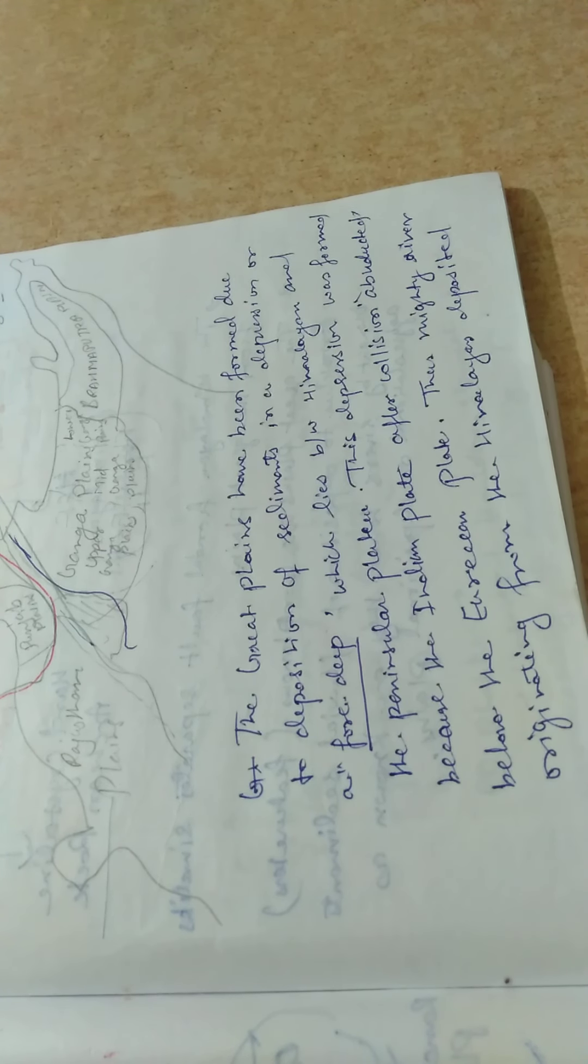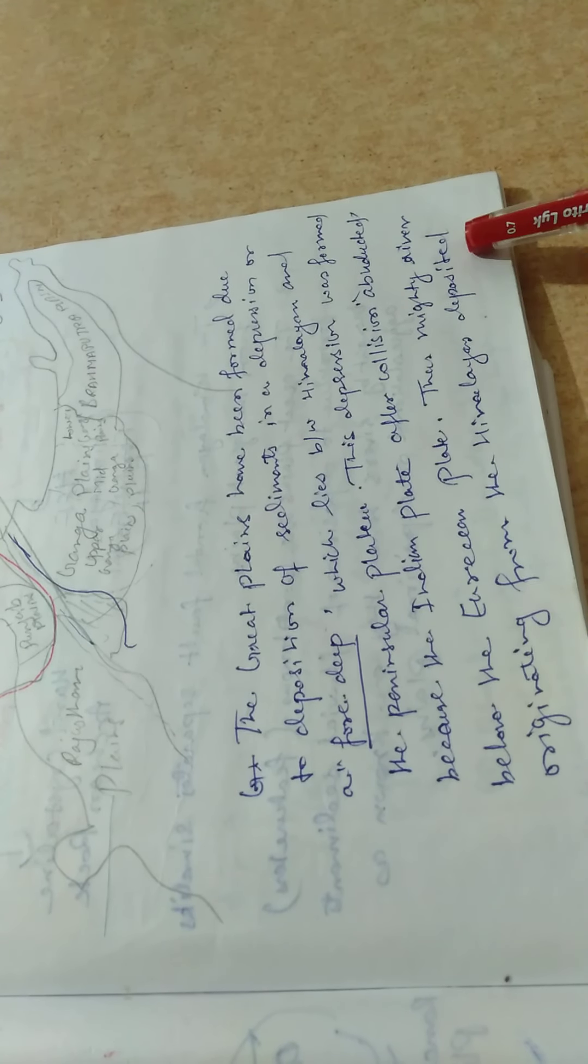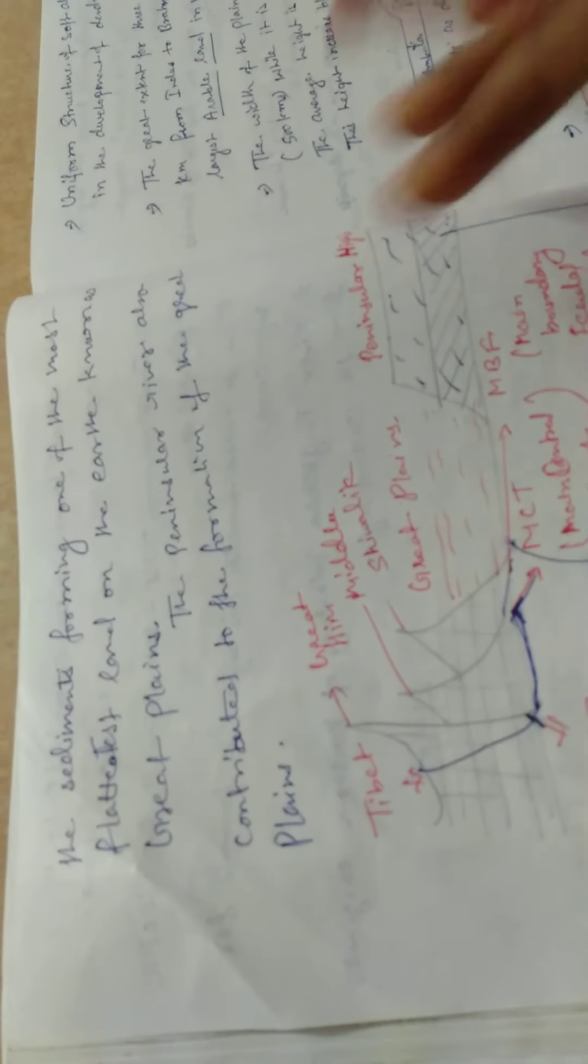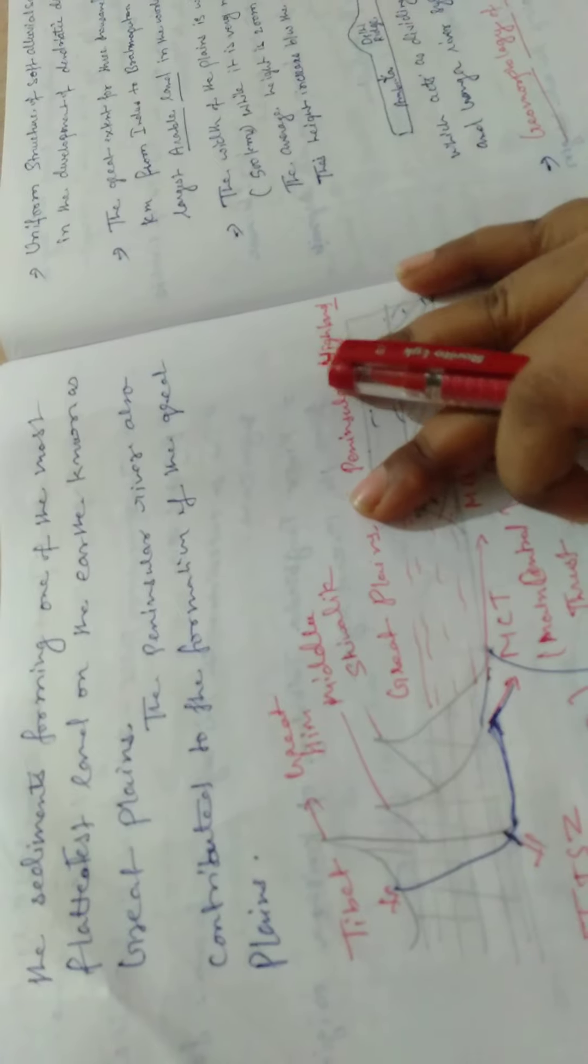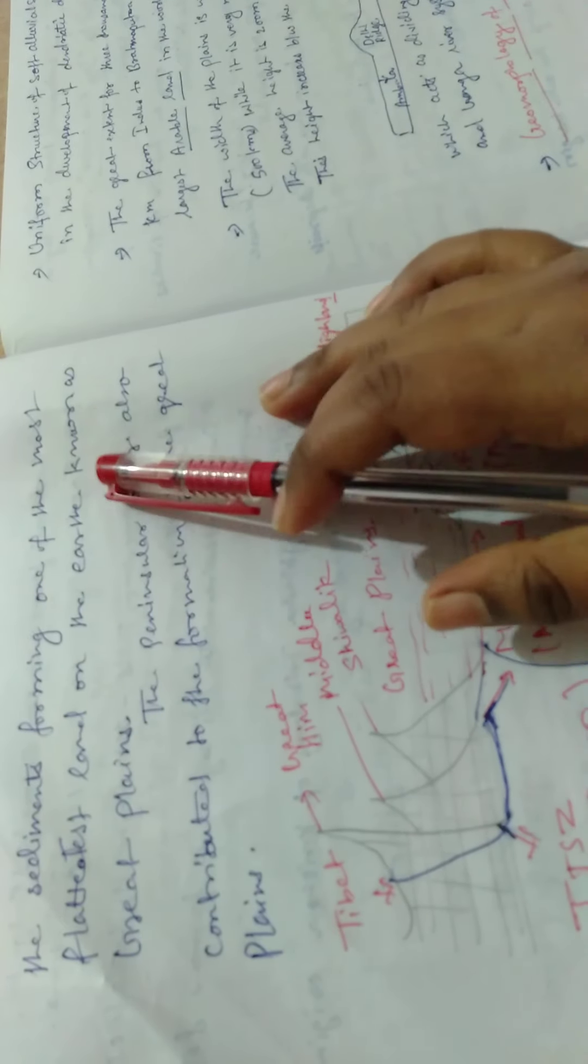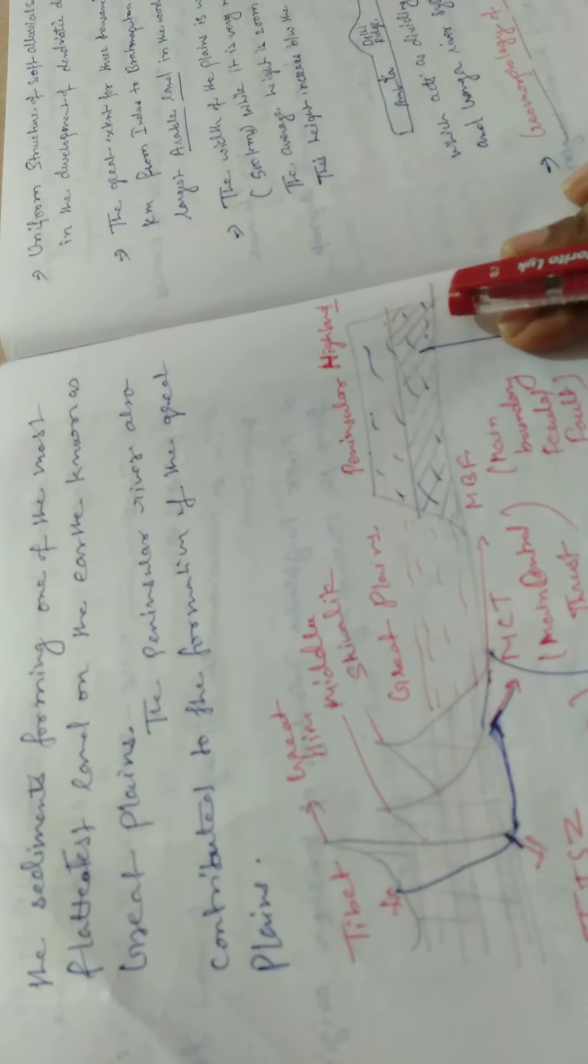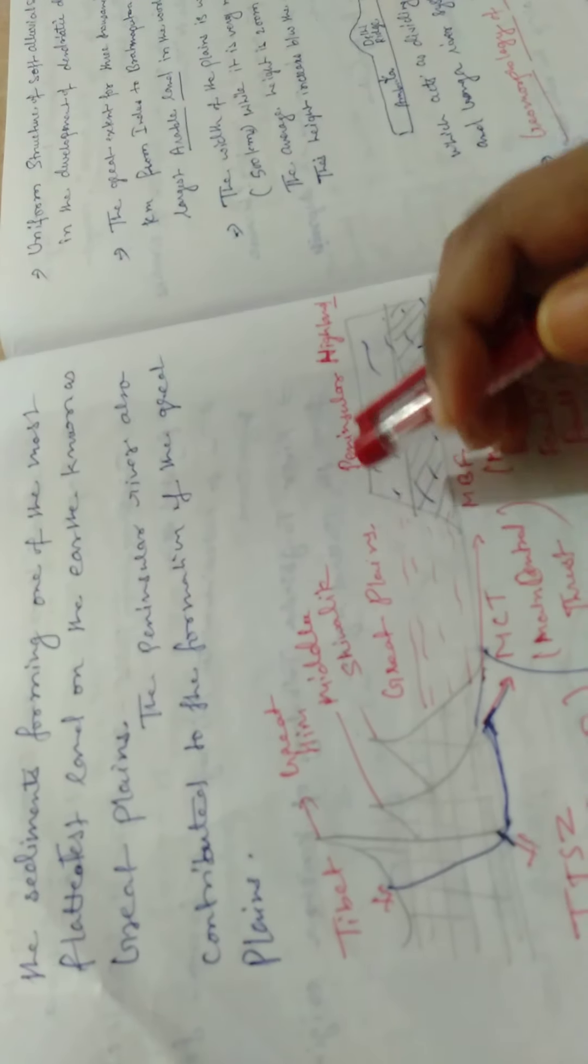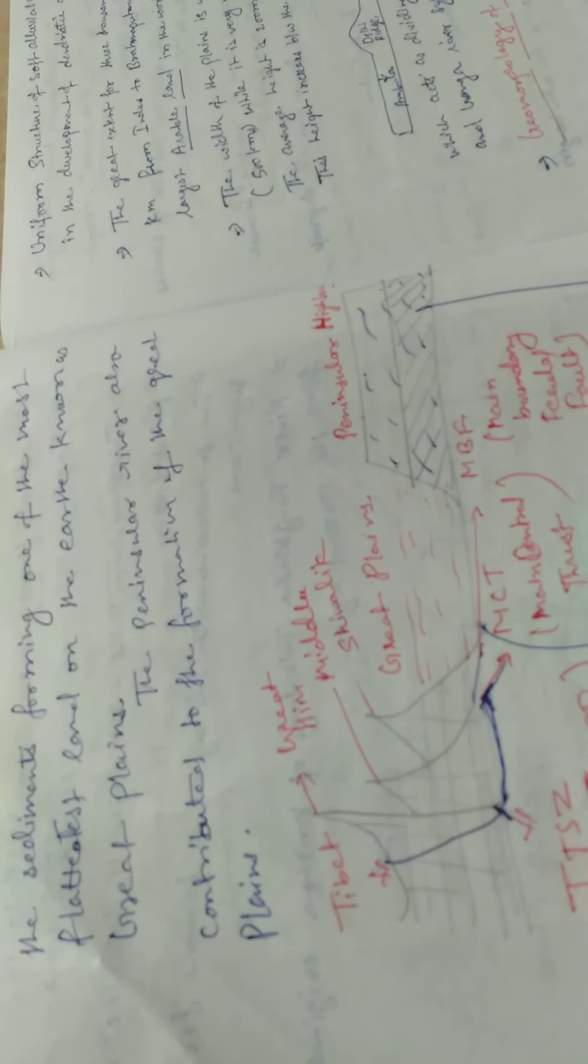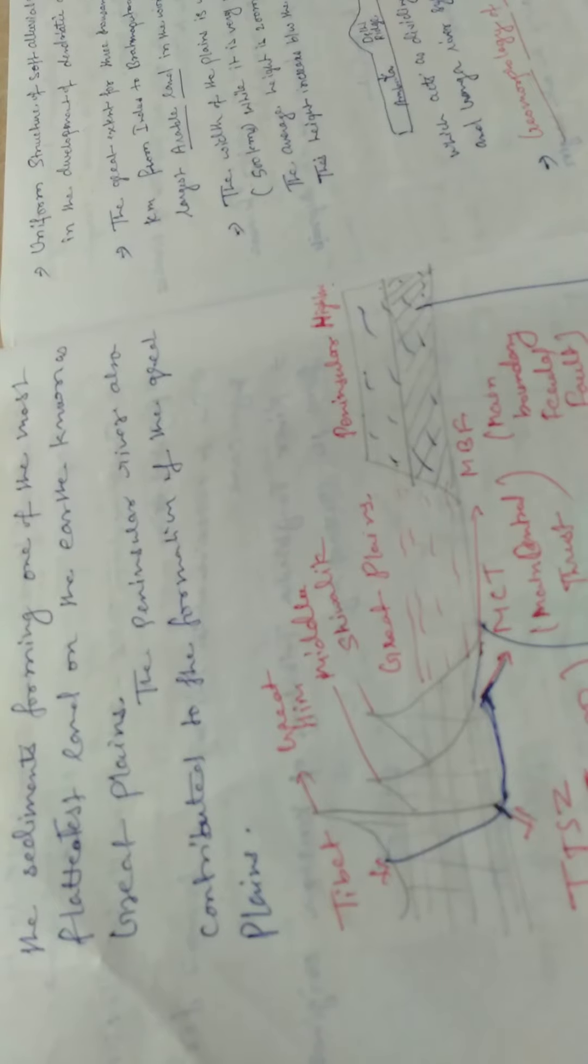This depression is filled with sediment forming the Great Plains. Thus, mighty rivers originating from the Himalaya deposited sediment forming one of the most flattest lands on earth known as Great Plains. The Peninsular River also contributed to the formation of the Great Plains.